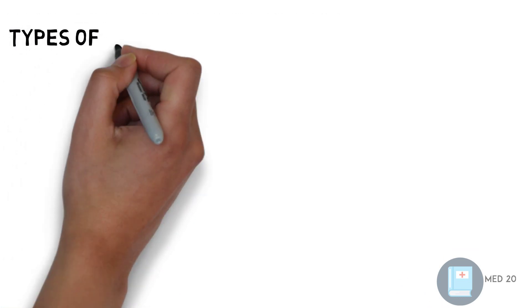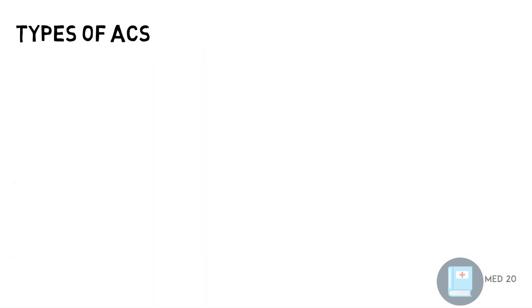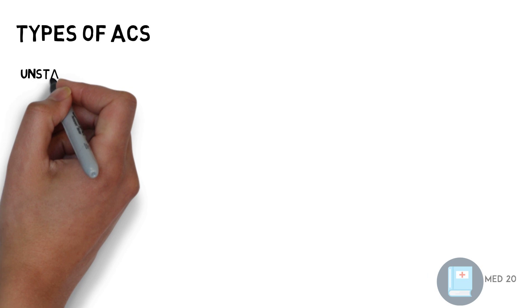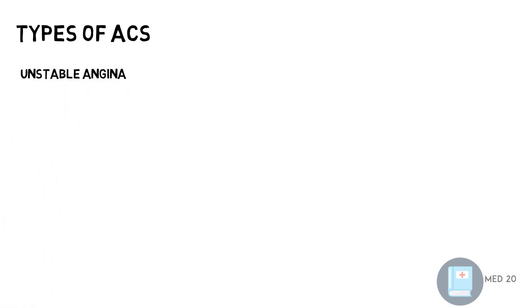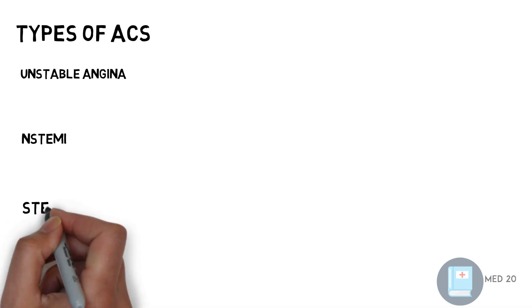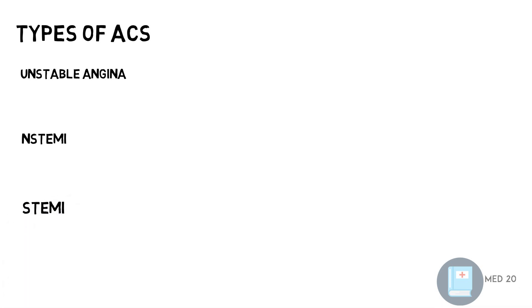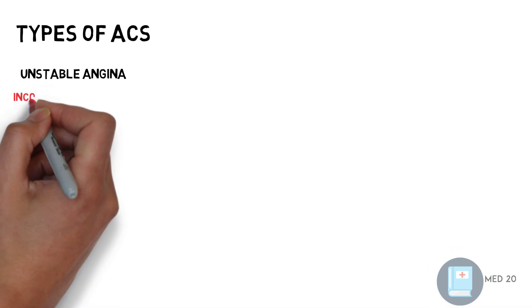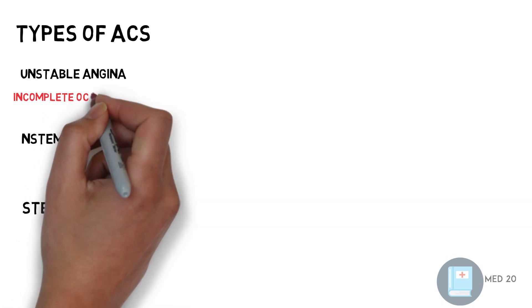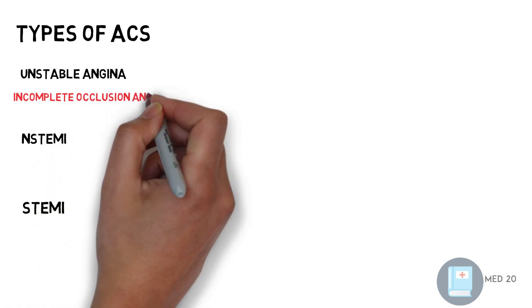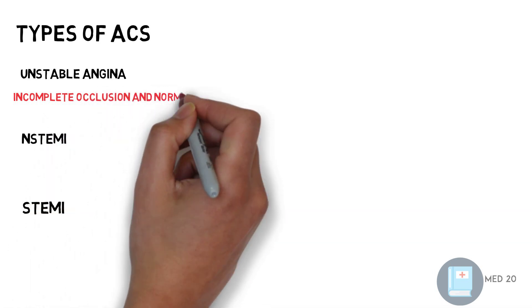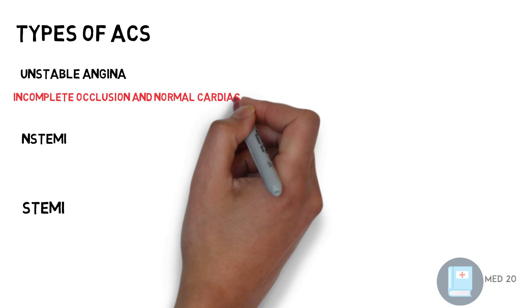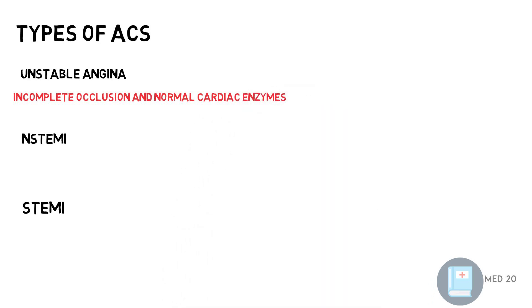Acute coronary syndrome is divided into three types: unstable angina, non-STEMI or non-ST elevation MI, and STEMI or ST elevation MI. Unstable angina is incomplete occlusion with normal cardiac enzymes, meaning the heart has not been damaged yet — so unstable angina is not a heart attack.